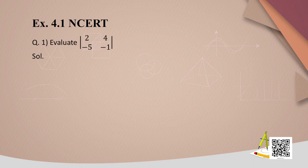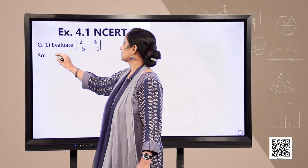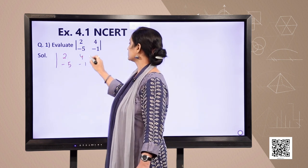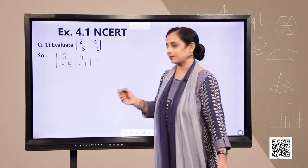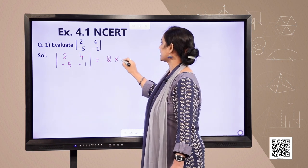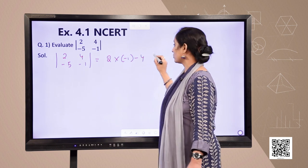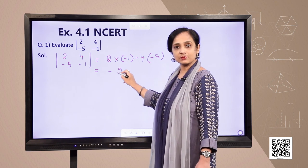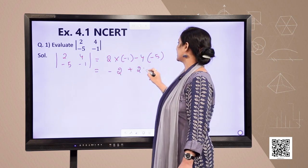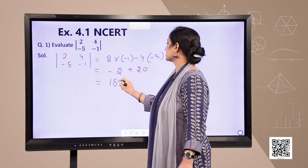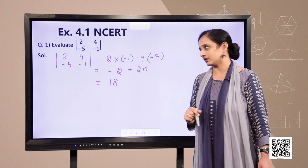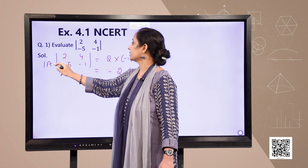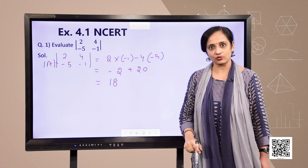Let us look at one more example from NCRT. The determinant [2, −5; 4, −1] is evaluated as 2×(−1) minus 4×(−5), which simplifies to −2 + 20 = 18. So det(A) = 18.